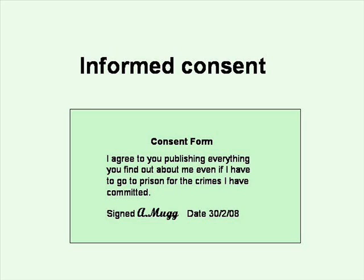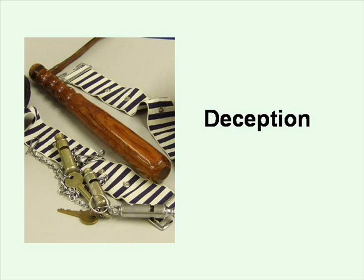Hence, informed consent is impossible in many situations. Also, having studied a group without their consent, is it ethical to publish your research without their consent? The third issue, deception, is related to informed consent. Sociologists doing covert research are deceiving the subjects of their research. However, the research would be impossible without this deception.